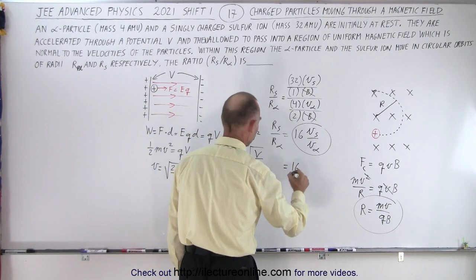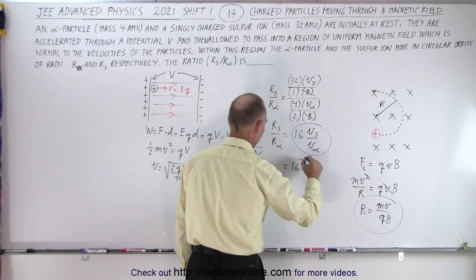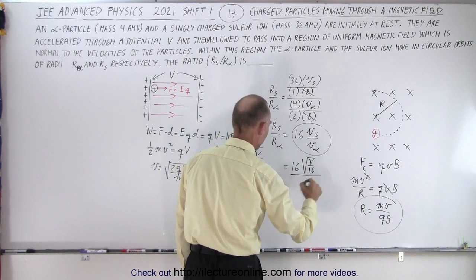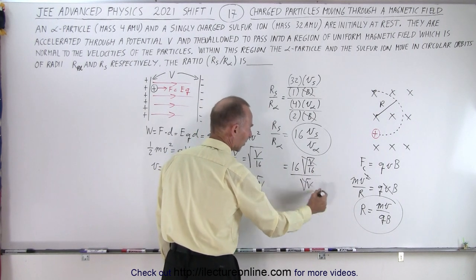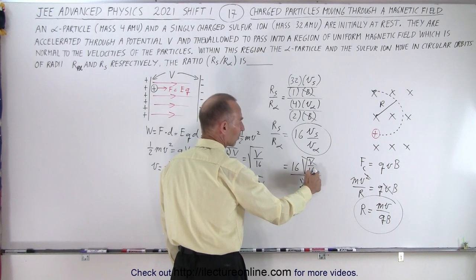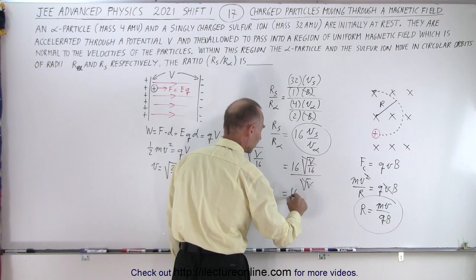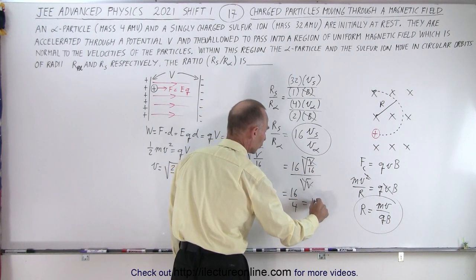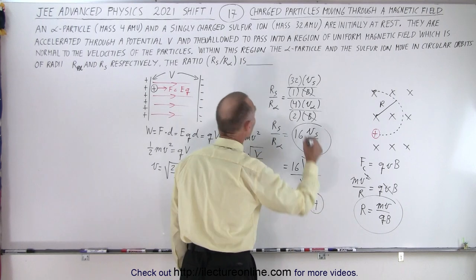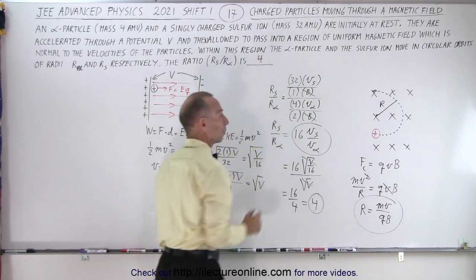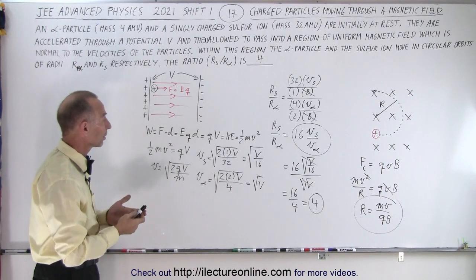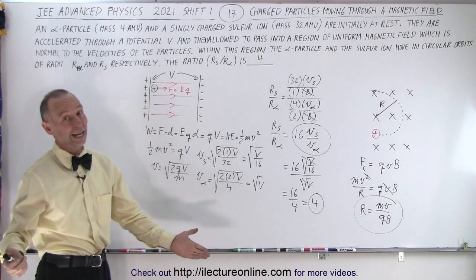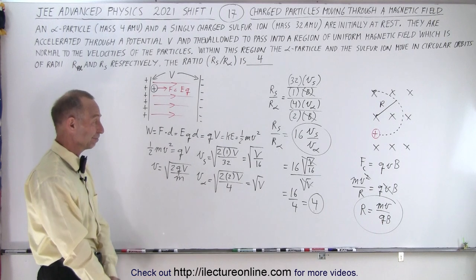The ratio RS/RA equals 16 times √(V/16) divided by √V. The √V terms cancel out, and 1 over √16 equals 1/4, so we get 16 divided by 4, which equals 4. The ratio of the radius of the sulfur ion to the radius of the alpha particle is 4.